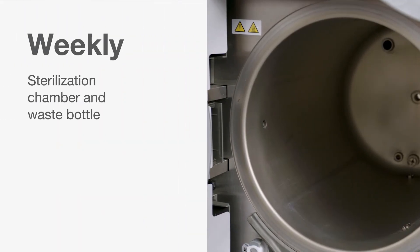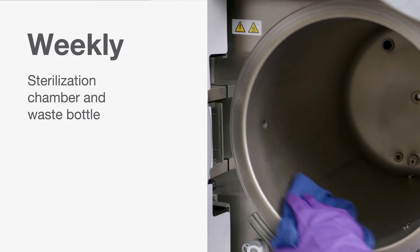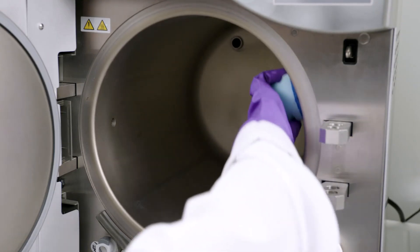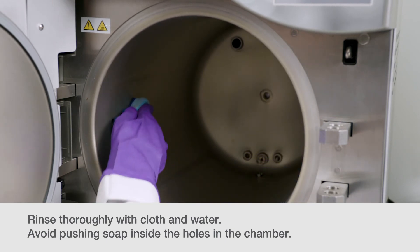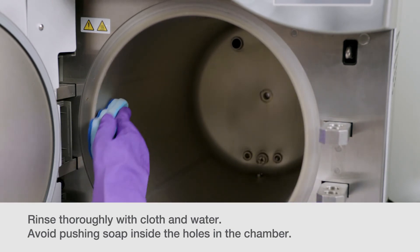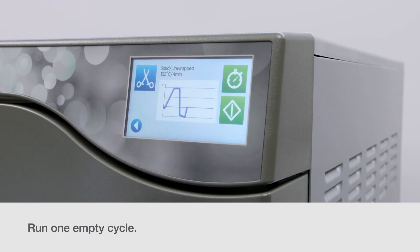Every week, clean the sterilization chamber and, if applicable, the waste bottle. Some cleaners may be too harsh on the internal copper and brass components of the units. Rinse thoroughly with a cloth and water. Avoid pushing any soap inside the holes in the chamber. Run one empty cycle after using any cleaner or soap.